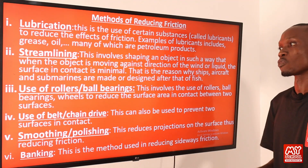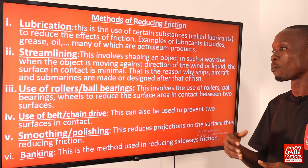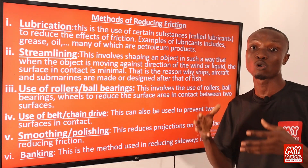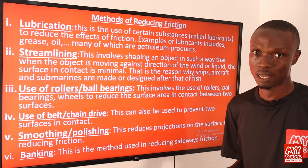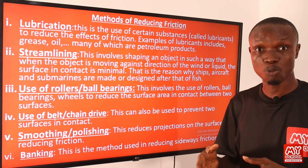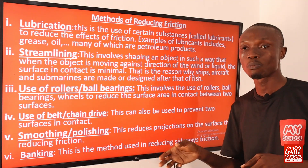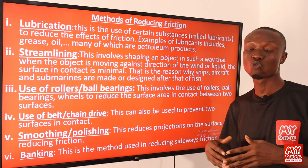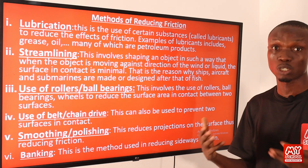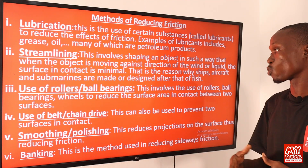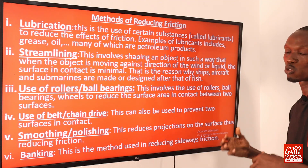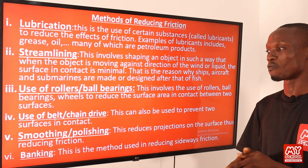The third method is the use of rollers and ball bearings. Rollers find application in transporting luggage — luggage trolleys have rollers that allow you to move them from one point to another with minimal friction. This works because rolling friction is less than sliding friction. Ball bearings also find application in bicycles and other machinery to reduce the surface area in contact between two surfaces.